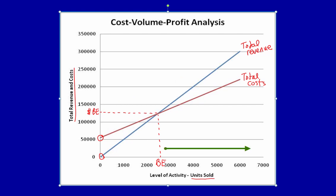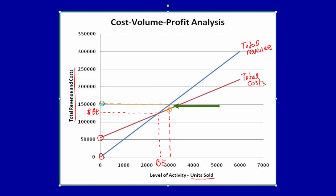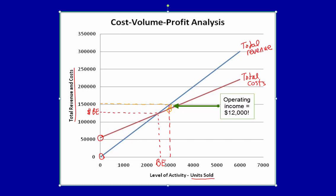If sales volume is above the break-even number of units, what would that mean? For instance, if our sales volume is 3,000 units, where it intercepts the total cost line is the total costs at 3,000 units, and where it intercepts the total revenue line is the total revenue of $150,000. The space between the total revenue line and the total cost line equals the profit earned — in this case, $12,000, as shown in our contribution margin income statement.